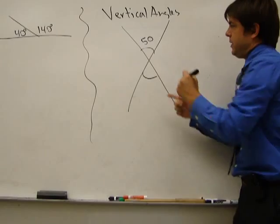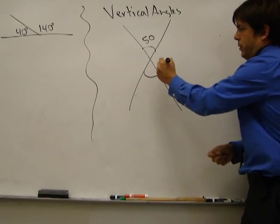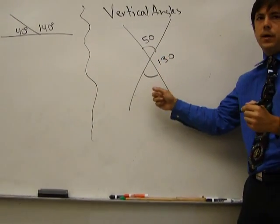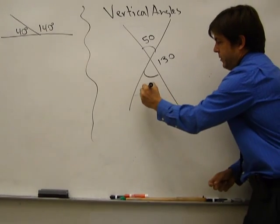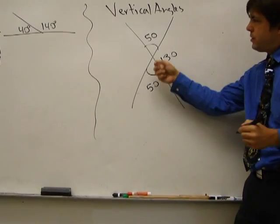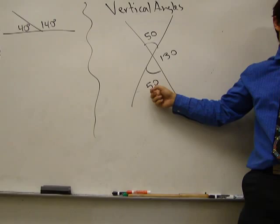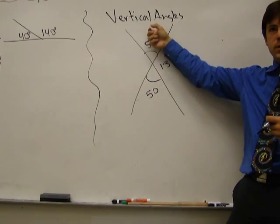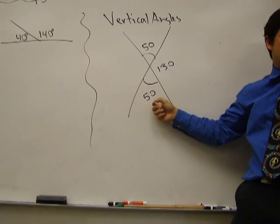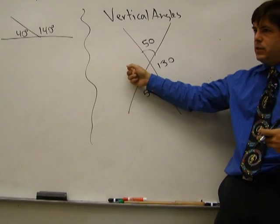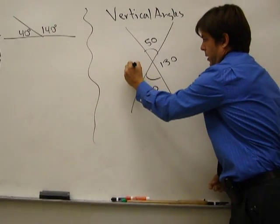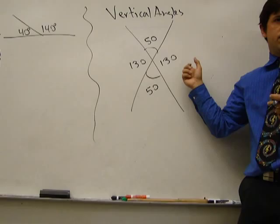Say this one was 50, what would this one be? 130. And if this one's 130, what does this one have to be? 50. So as you can see, these two have to be congruent. That's how vertical angles work. The ones that are across from each other are congruent. What would be the measure of this angle? 130. Which means it's the same as this one. Does that make sense?